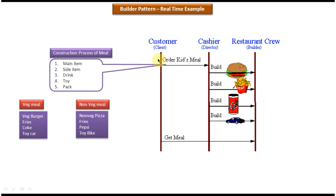The customer goes to the hotel and orders a kids meal to the cashier. There are two kinds of kids meal: one is veg meal and another one is non-veg meal.